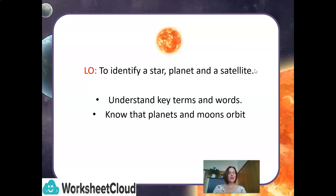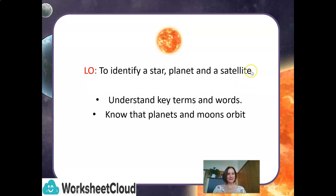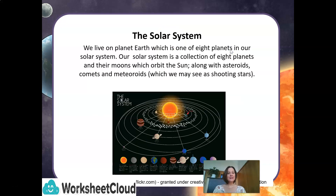We want to have the following objectives from this lesson. We want to be able to identify a star, a planet and a satellite. We want to understand key terms and words and we also want to know that the planets and the moons orbit. So, let's take a look first of all at the solar system.